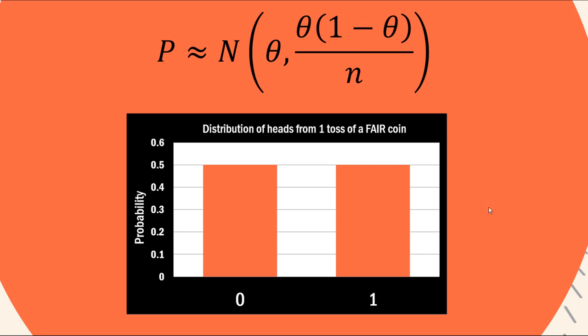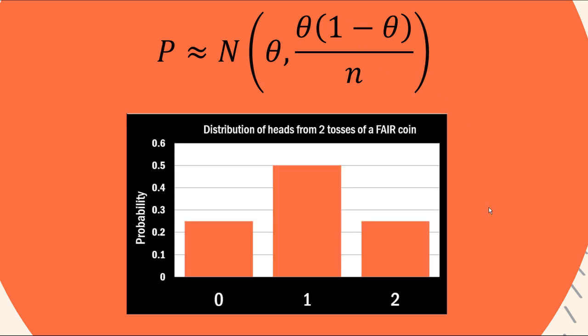But as you'll see as we increase n, so say let's go to two tosses of a fair coin, because there are two ways of getting one head, so this is the distribution of heads from those two tosses, because there are two ways of getting that one head that becomes more probable than zero or two. So it at least starts accumulating more data towards the middle here. But still not very normal, very discrete and chunky at the moment.